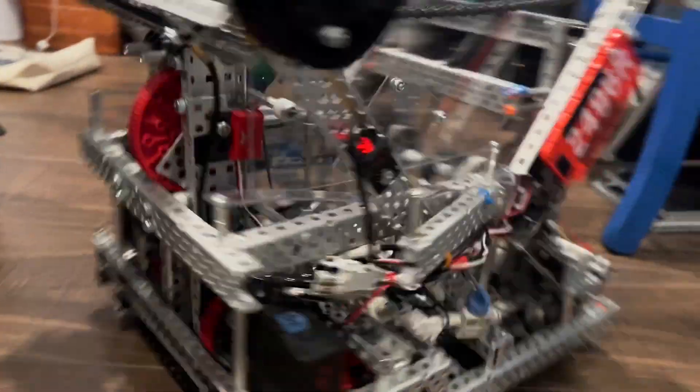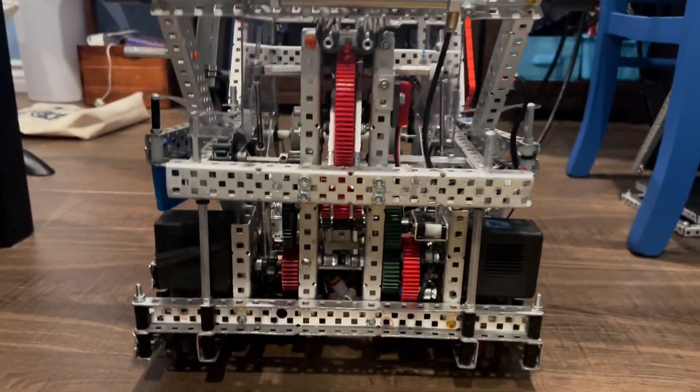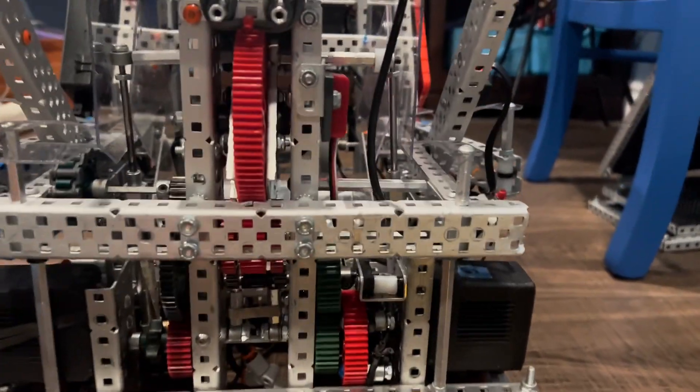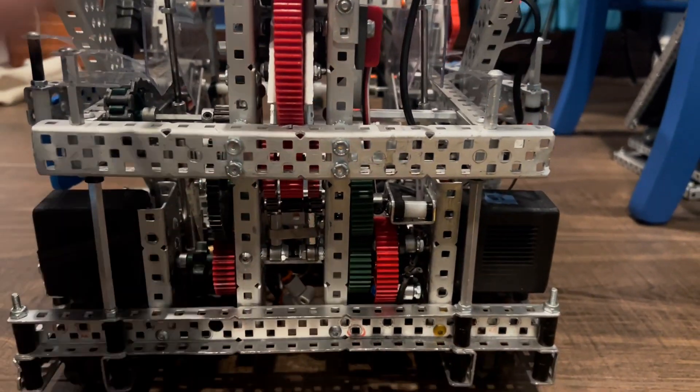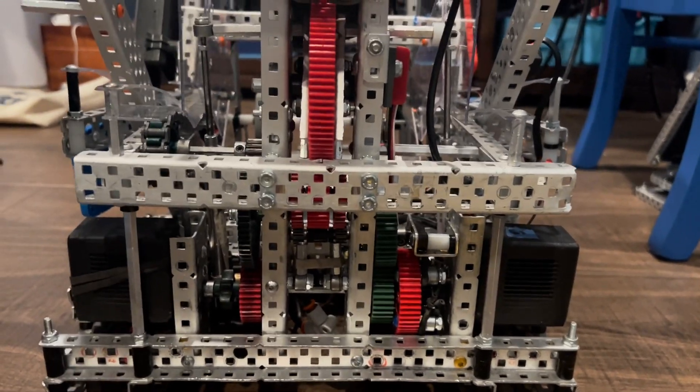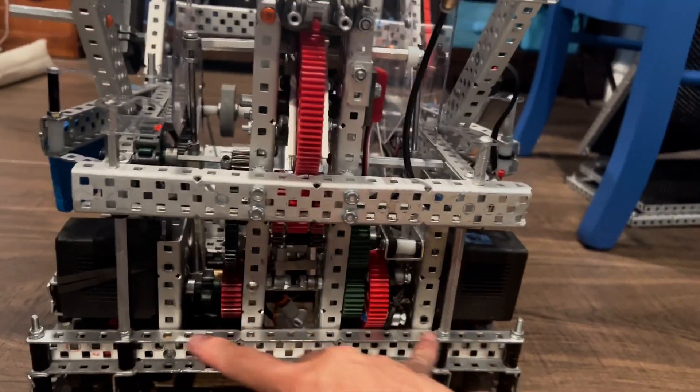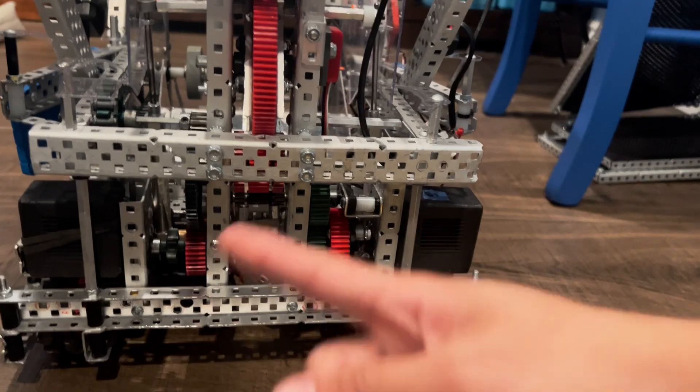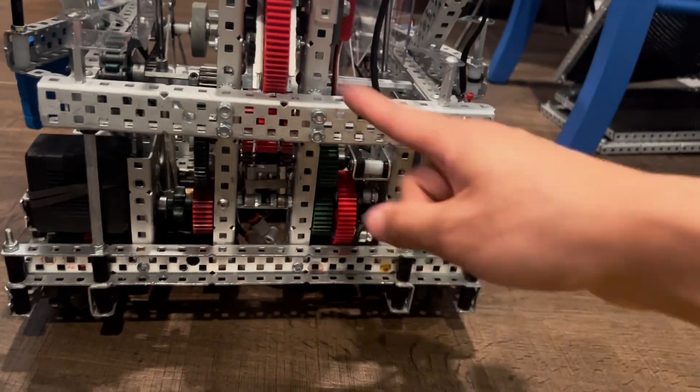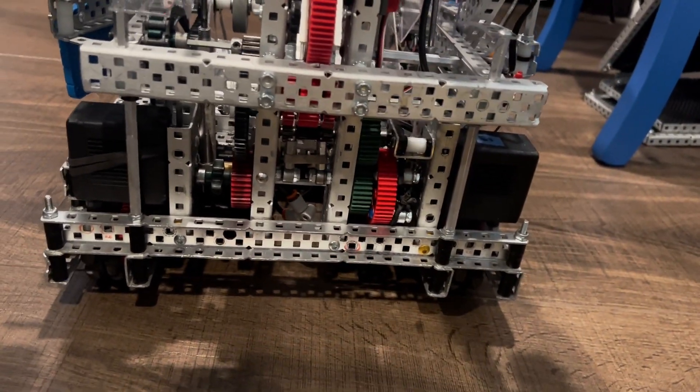Onto the most unique part of this robot, which was the motor distribution. We actually had two motors that would power both the intake and the catapult at the same time. So that means when we spin these motors forward, the intake would spin and the catapult would not. But we spin the motors backwards, the catapult would start rebuilding.